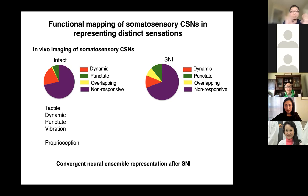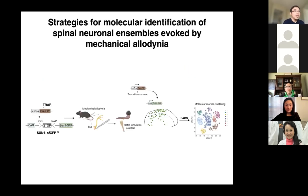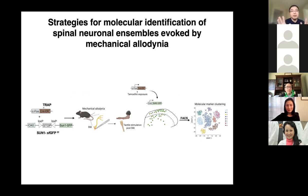For the second future direction, we are trying to identify pain-evoked neuronal ensembles. We are using the TRAP2 mouse line developed by Liqun Luo's lab, where tamoxifen induction upon different stimuli — here using mechanical allodynia as an example — allows us to transiently capture those neurons activated by different pain stimuli.